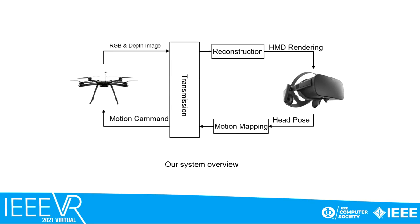First, the HMD records the user's head motion, which is translated to control signals to control the motion of the UAV in the remote environment. As the motion of the UAV mimics the motion of the user's head, the images recorded by the cameras on the UAV contain the desired views of the user. Then the images are transmitted back to the HMD to be displayed to the user, so Telexistence is achieved as the user can view the remote scene freely.